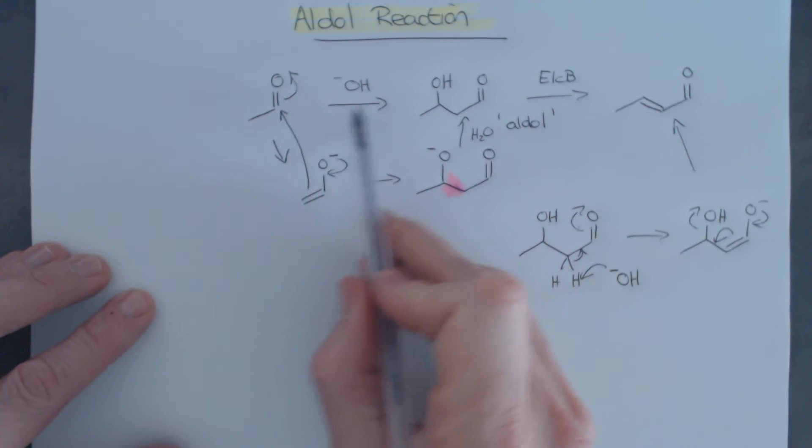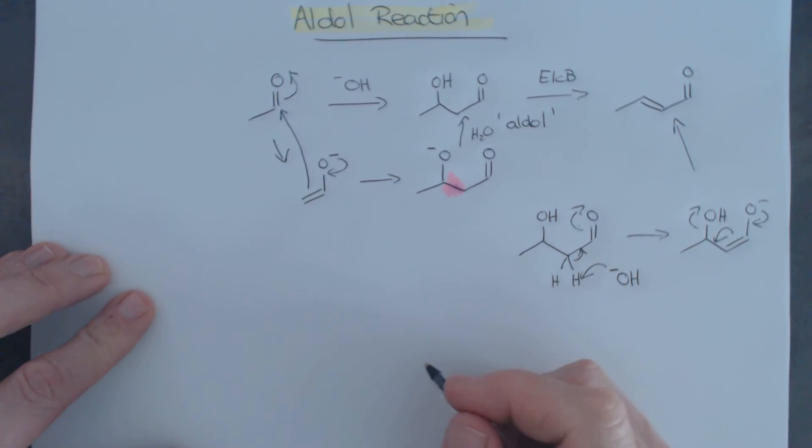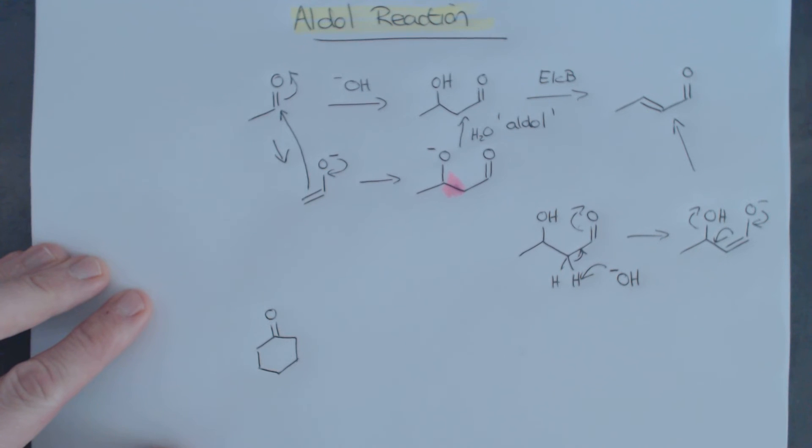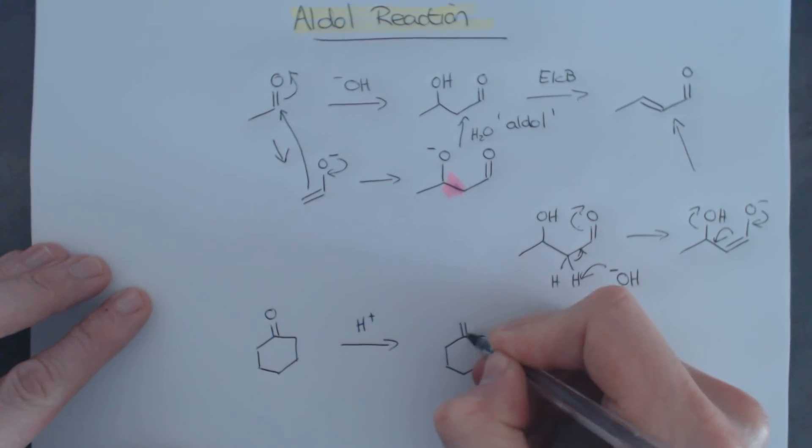The aldol reaction, by the way, I've shown here is basically catalyzed by base, but the aldol reaction can also be catalyzed by an acid. So, here, I'm not going to use an aldehyde, but I'm going to use a ketone because that's absolutely fine. So, if I take this ketone and I treat it with some acid and just cook it up for a bit, the product that I would get would look like this over here.